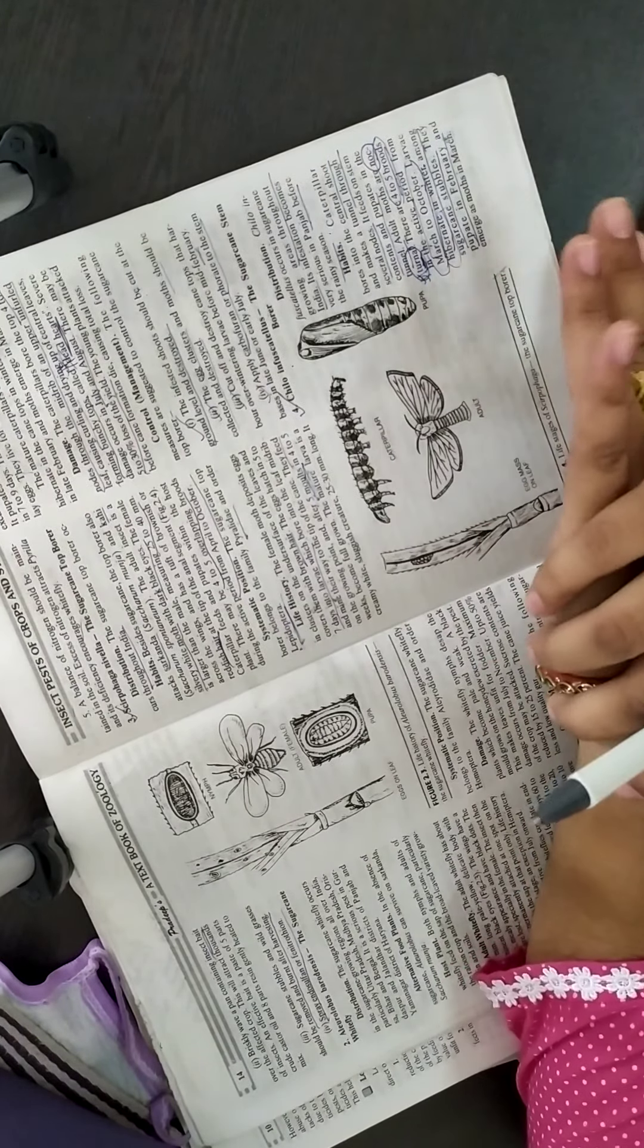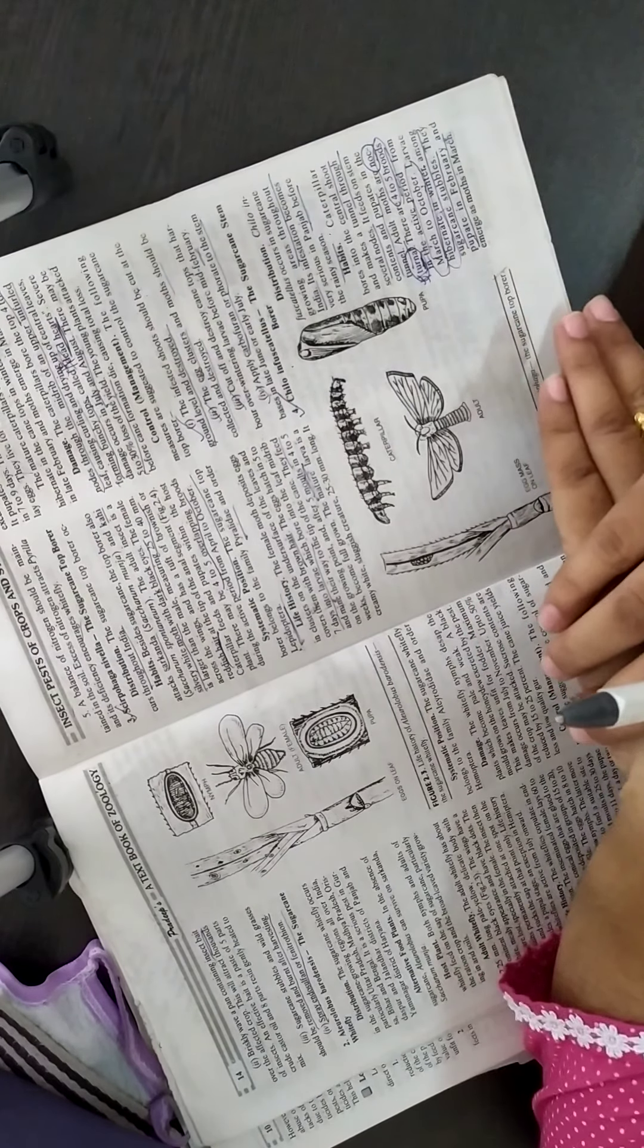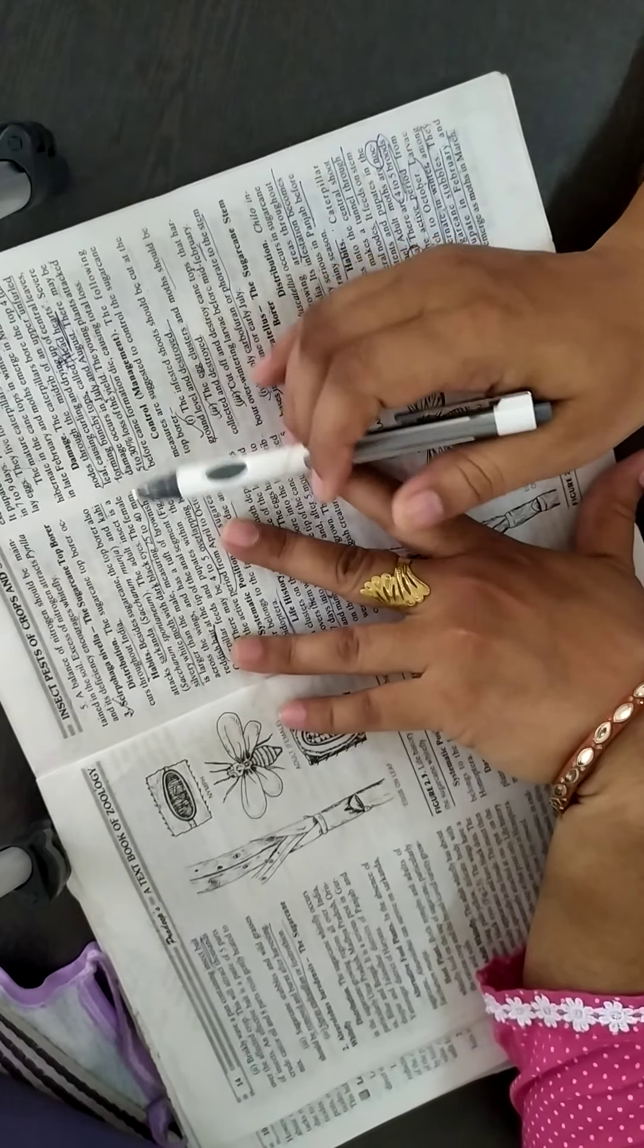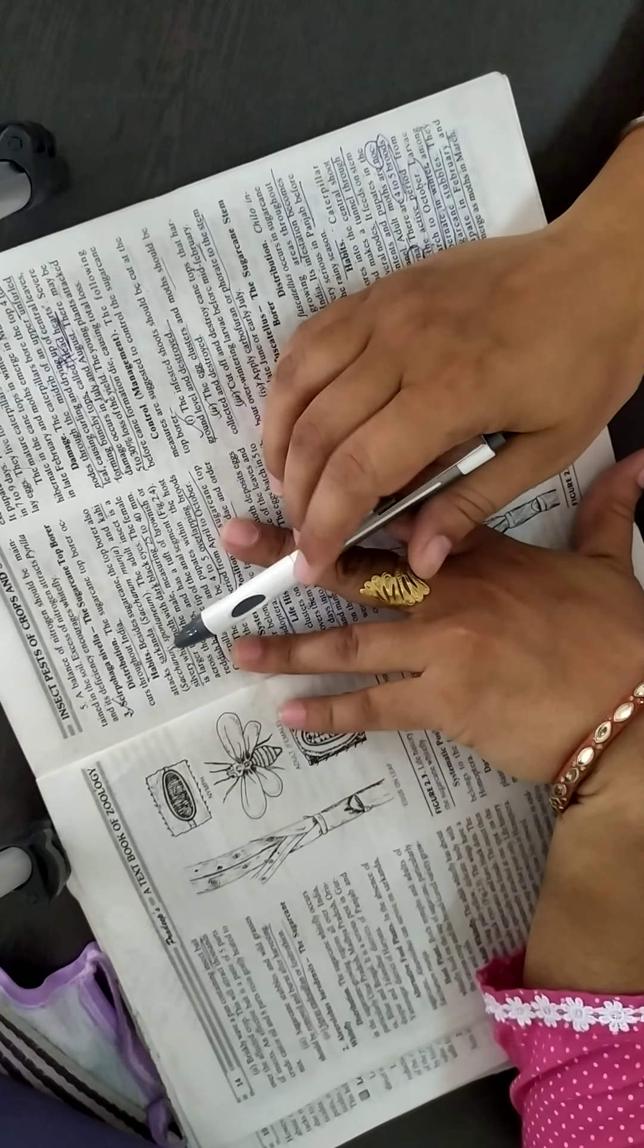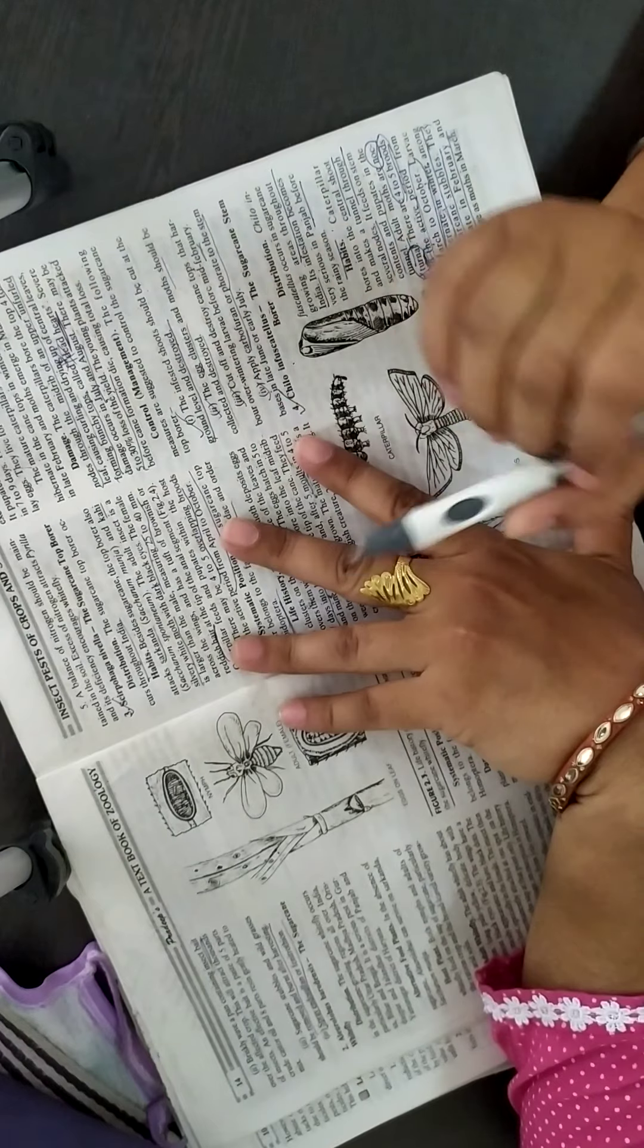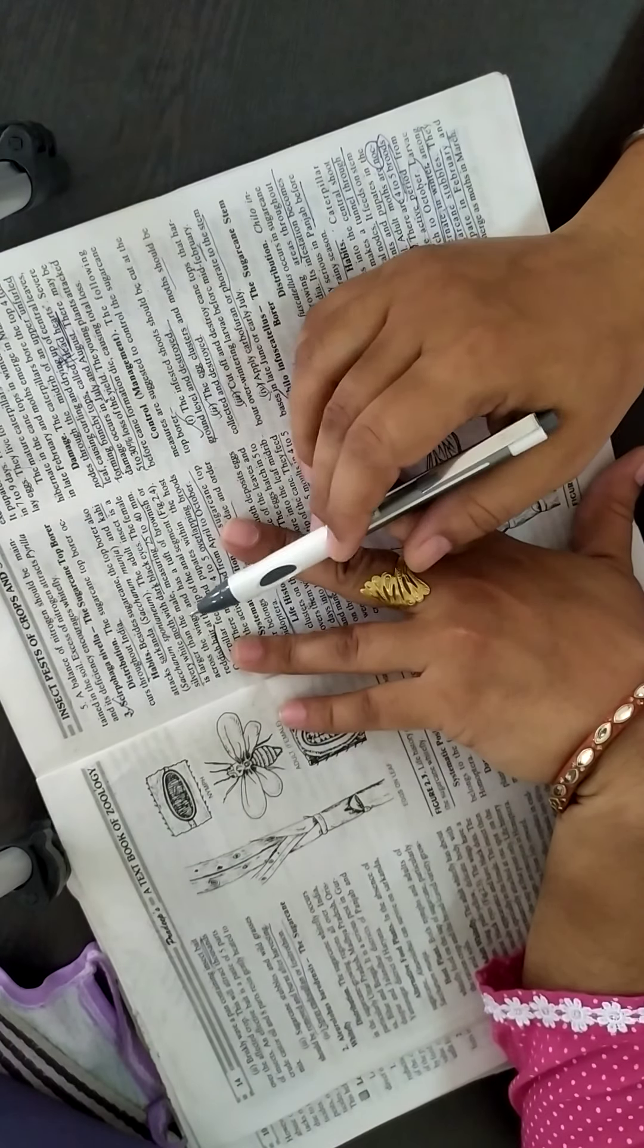Distributed throughout India. If we talk about habits of this pest, it feeds on the alternative hosts like sirkanda and kahi. These both are the alternative hosts for this pest.